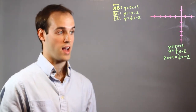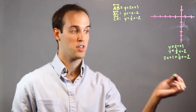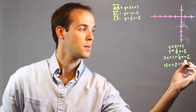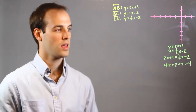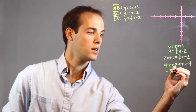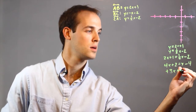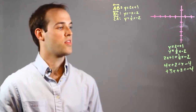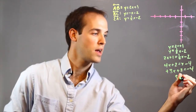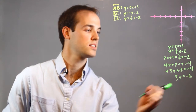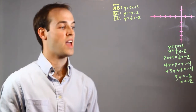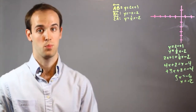Now I'm simply going to solve for x. First I'm going to multiply everything by 2 to get rid of this fraction: 4x plus 2 equals x minus 4. And then I will bring this x over to this side by subtracting it: 3x equals negative 6. Then divide both sides by 3, x equals negative 2.